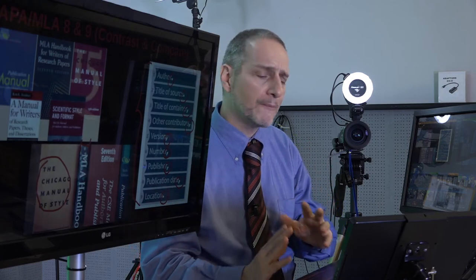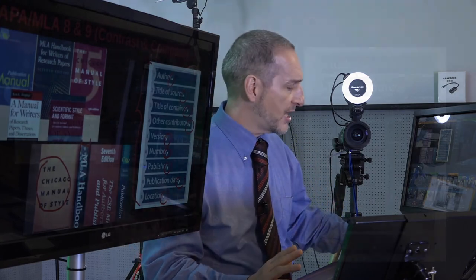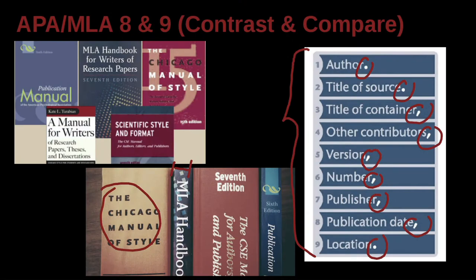MLA, on the other hand, is much more focused on their goal, which is: can the reader find the reference? That's the main goal they lay out. And they try to help you do that by giving you this graphic, saying include these things and the reader should be able to find what they're looking for.